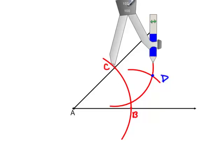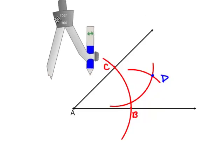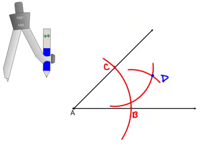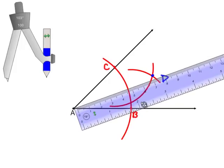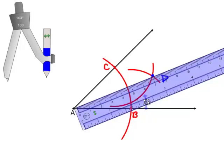Then taking your straight edge, place your straight edge such that you make a line that goes through points A and D.